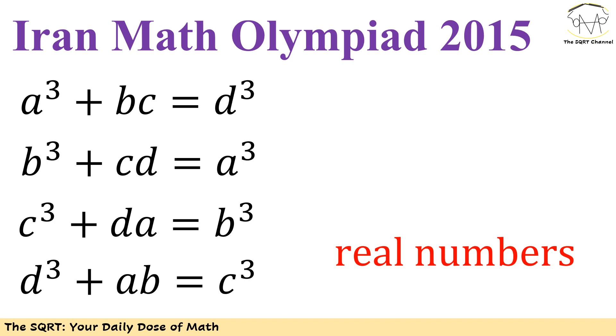The equations are in the notation of a cubic number plus a multiplication of two numbers equals to another cubic number. So basically I have a³ + bc = d³, I have b³ + cd = a³, I have c³ + da = b³.